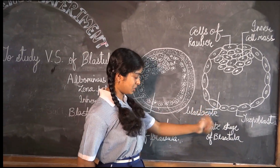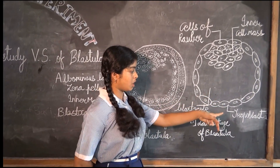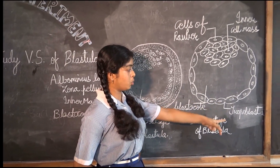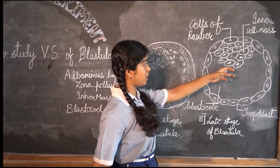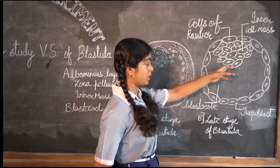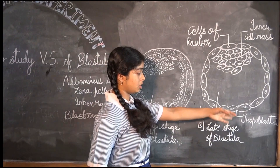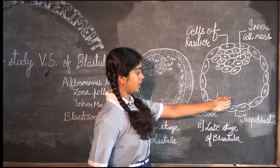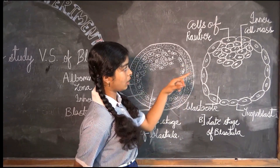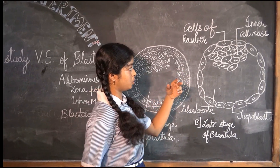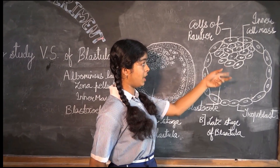The blastocyst contains a fluid-like structure which is absorbed by the trophoblast cell layer. The inner cell remains attached to one side of the trophoblast cell layer. The trophoblast cell layer produces extra embryonic membranes. The inner cell mass develops due to the well-developed embryo.